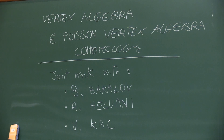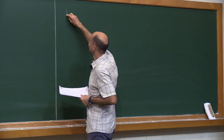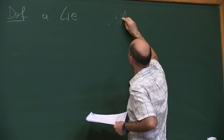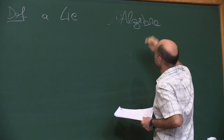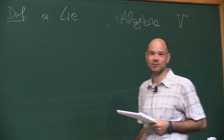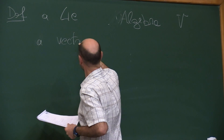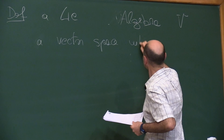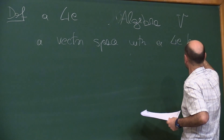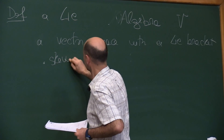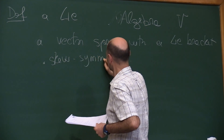I've been taught that the first thing one says in a talk should be known to everybody in the audience, so I will start with something that I'm sure everybody knows, which is the definition of a Lie algebra. Definition: Lie algebra.